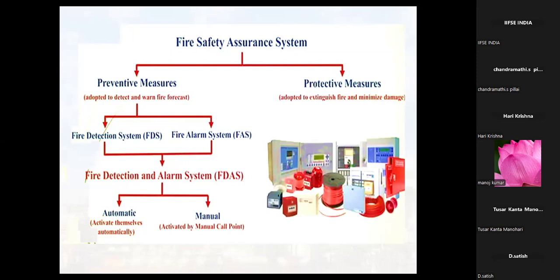The Fire Detection and Alarm System (FDAS) can be of two types. One is automatic, which activates itself automatically, or it can be manually activated by a manual call point.